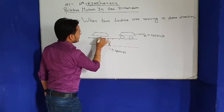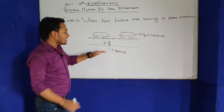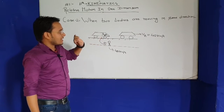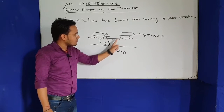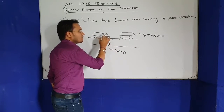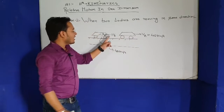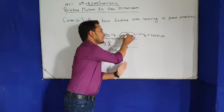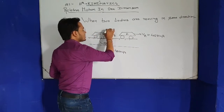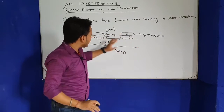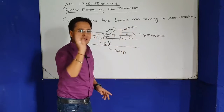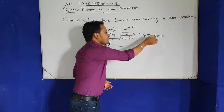Now suppose on the same road, this observer goes and sits inside another car. Now when he watches the first car from inside this second car, he no longer sees it at 40 km per hour. If the observer's car is also going in the same direction at 20 km per hour, then from general observation, the observer will see the first car moving at 20 km per hour.